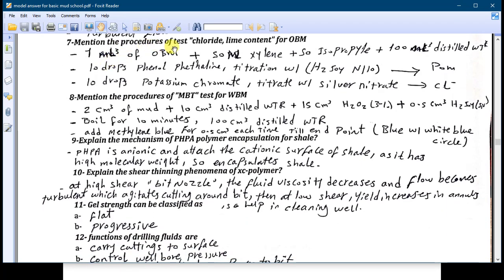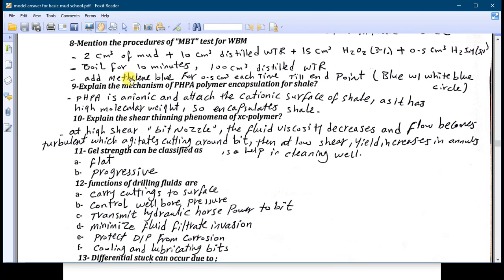Question seven: mention the procedures for testing the chloride and lime content in the oil-based mud. It's not a big deal because we have talked about this in the testing. One milliliter of the oil base plus 15 milliliters of xylene, 50 milliliters of isopropyl, and 100 milliliters of distilled water, then 10 drops of phenolphthalein and titration with H2SO4 and you will get the lime content. After this, in the same sample you will add 10 drops of potassium chromate which gives you yellow color, and titrate with silver nitrate until it becomes reddish brown and this gives the chloride.